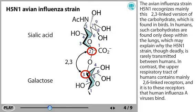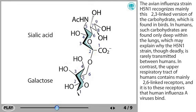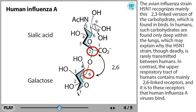The avian influenza strain H5N1 recognizes mainly this alpha-2,3 link version of the carbohydrate, which is found in birds. In humans, such carbohydrates are found only deep within the lungs, which may explain why the H5N1 strain, though deadly, is rarely transmitted between humans. In contrast, the upper respiratory tract of humans contains mainly alpha-2,6 link receptors, and it is to these receptors that human influenza A viruses bind.